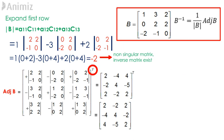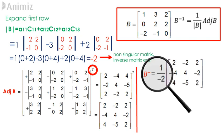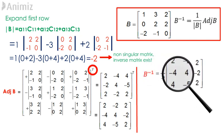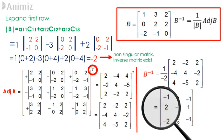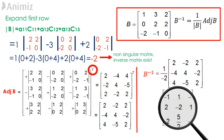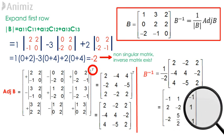Having found the determinant and adjoined of matrix B, we now substitute them into the formula of inverse matrices. B inverse is 1 divided by the determinant of B multiplied by the adjoined of B. So 1 divided by negative 2 times the adjoined of matrix B: 2, negative 2, 2, negative 4, 4, negative 2, 4, negative 5, 2. This gives us the inverse matrix of B to be negative 1, 1, negative 1, 2, negative 2, 1, negative 2, 5 over 2, negative 1.